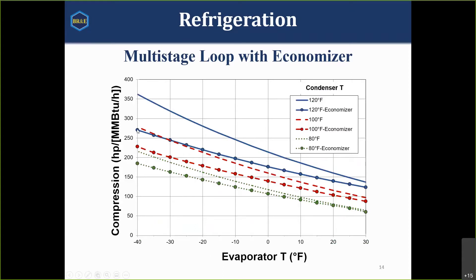The economizer is really beneficial when there's a large temperature difference between the condenser and evaporator. At a 120-degree condenser temperature, the economizer drops power requirements from about 360 down to about 230–270 horsepower — roughly a 25 percent reduction. The difference diminishes as the condenser temperature goes down or as the evaporator temperature gets closer to the condenser temperature.